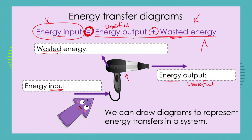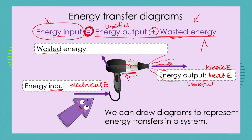Let's remind ourselves using the hairdryer example. What is the energy input? It is electrical energy. What do we intend as the use of a hairdryer? It must produce kinetic energy, because the kinetic energy blows the air out of the hairdryer. It must also produce heat energy — thermal energy. It has little elements inside that heat up, blowing out hot moving air. These energy outputs are what we call the useful energy.